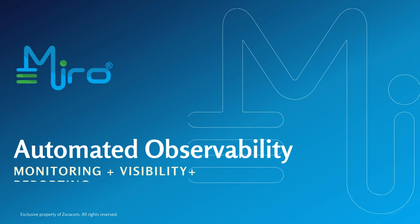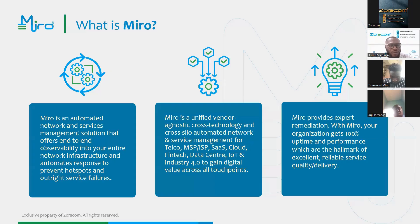This is the Mirror solution — our automated observability solution for monitoring, visibility, and reporting. Mirror is our automated network and service management solution that offers end-to-end observability into your network infrastructure and automates responses to prevent hotspots and outright service failure.